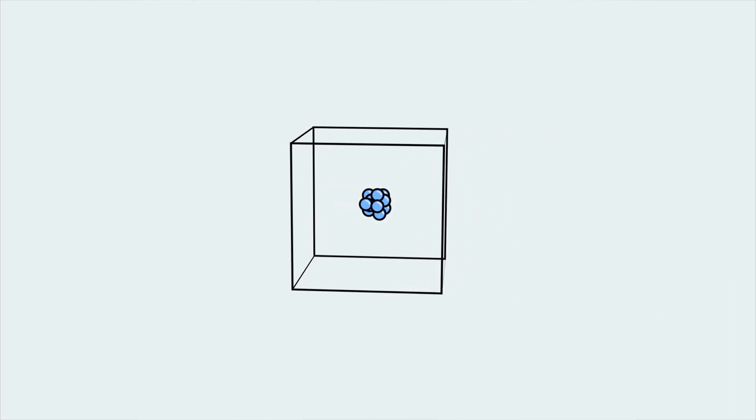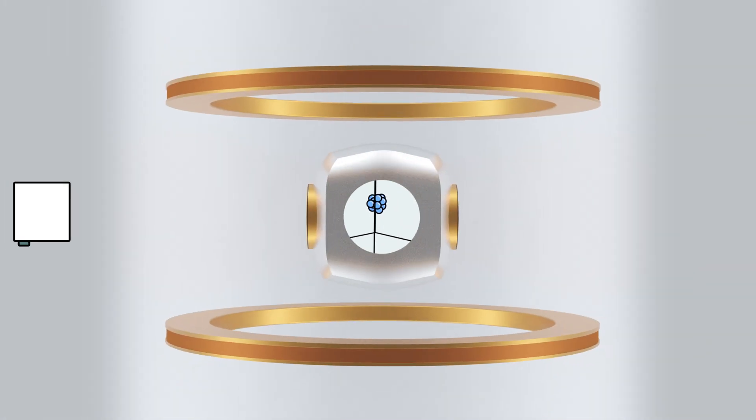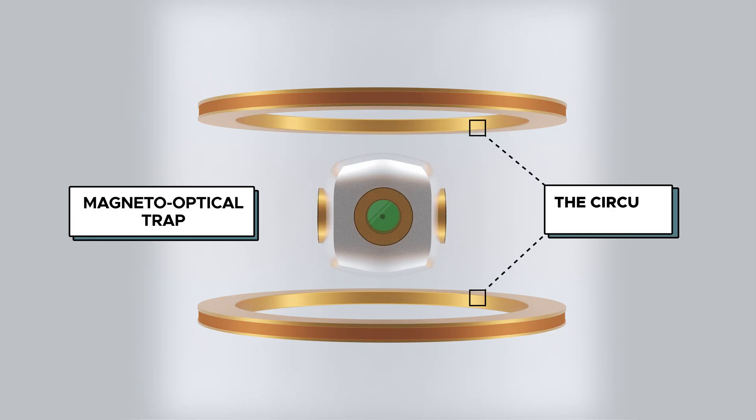These ultracold atoms are trapped in a magneto-optical trap via the circular coils you see here, which are switched off to allow the atoms to fall.